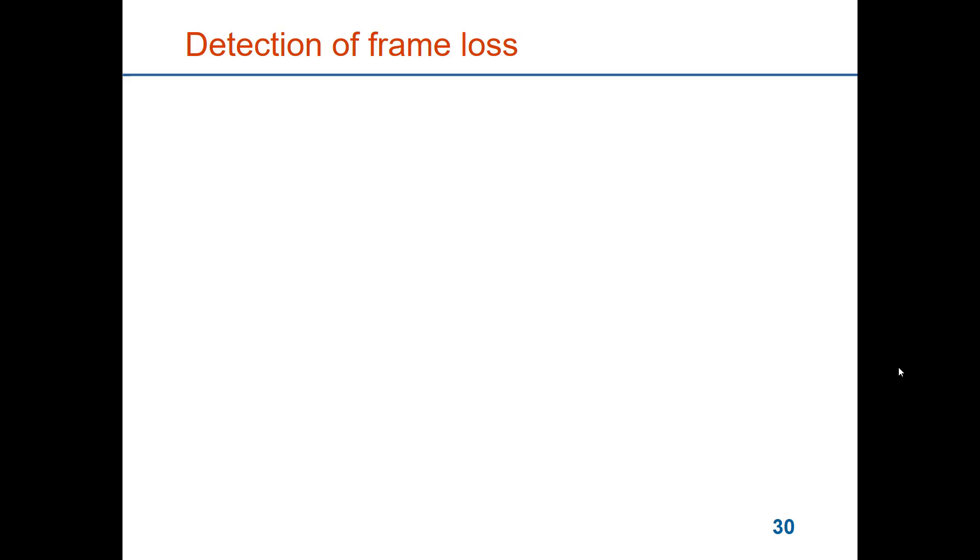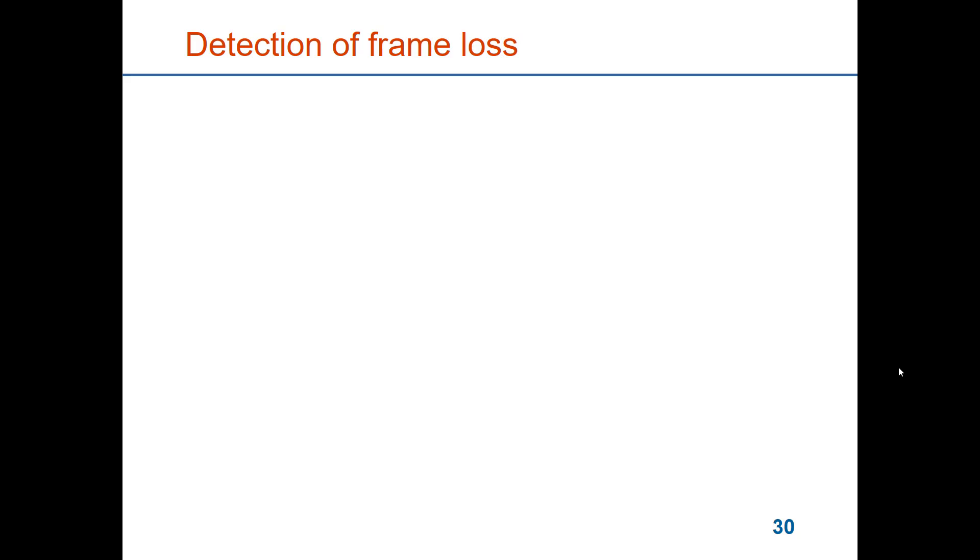So the previous methods were to detect whether there have been errors in the data, to check the integrity of the data. That data that is being delivered at a data link receiver is correctly received, and you can trust the data and that data can be given to a higher protocol layer.